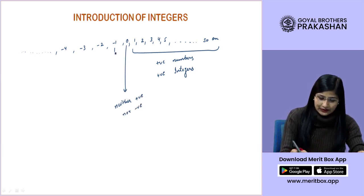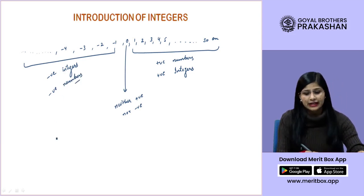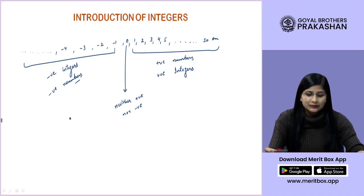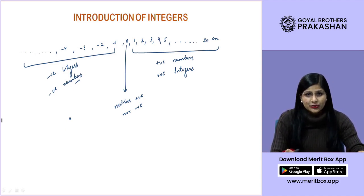Then we have these negative numbers, negative integers you can call them or you can say them negative numbers. So, the collection of all the positive, all the negatives and 0, this set is called as the set of integers.